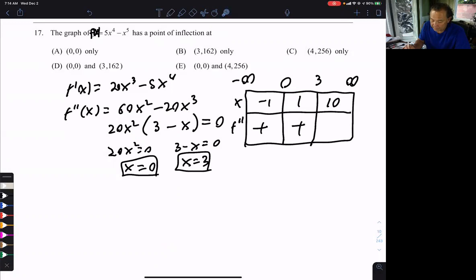Let's plug in 10. Again, that's always positive. 3 minus 10 is negative, so a positive times a negative is negative. So the only place where the second derivative changes signs is right here at 3.